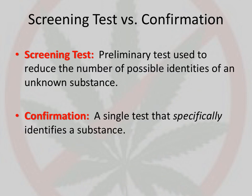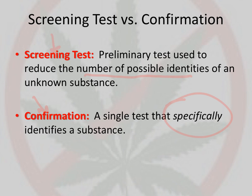Much like it implies, a screening test is just a preliminary test that you use to initially reduce the number of possible identities of an unknown substance. So let's say you have a possible drug and you're not sure what it is — you want to do something just to reduce that possibility down to a handful of drugs. And then a confirmation test, or confirmatory test, is one that will specifically identify what that substance is. Most likely, you may not have a confirmation test within the field. Within the field you usually do a screening test, but once you take it back to the laboratory, you can do a confirmation test.